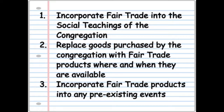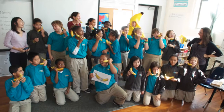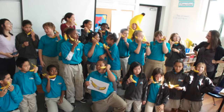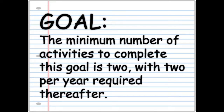Now let's go into these goals a bit deeper. Incorporate Fair Trade into the social teachings of the congregation. From drawing parallels to scripture and teachings to demonstrating how Fair Trade ties into the core values of your faith, the first goal is to educate members of the congregation about how purchasing Fair Trade empowers them to live out their religious tradition. The minimum number of activities to complete this goal is two, with two per year required thereafter.